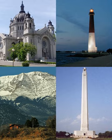Cultural landscapes are defined as a geographic area, including both cultural and natural resources and the wildlife or domestic animals therein, associated with a historic event, activity, or person, or that exhibit other cultural or aesthetic values. There are four general types of cultural landscapes, not mutually exclusive: historic sites, historic designed landscapes, historic vernacular landscapes, and ethnographic landscapes.